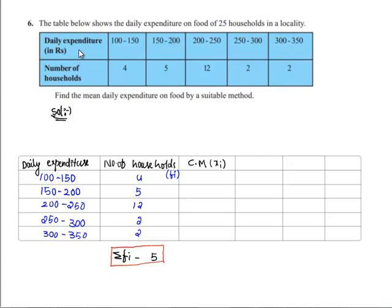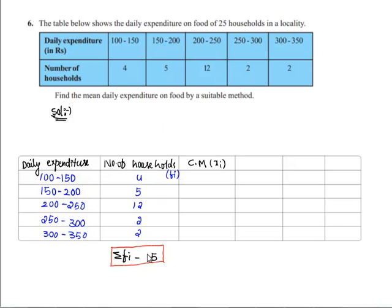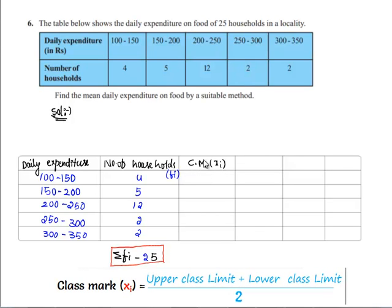Given: daily expenditure is in grouped data and number of households is taken as frequency. We have noted this in tabular form — daily expenditure with lower limits and upper limits, frequencies noted, and the sum of frequencies sigma fi is 25. Going to class mark, we have to find xi, which is the midpoint of upper limit and lower limit.